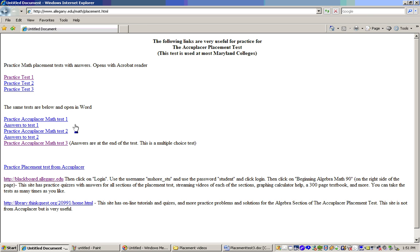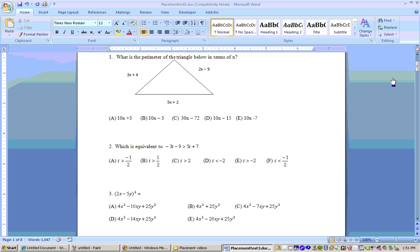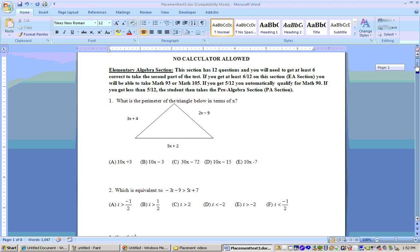The practice tests are in Word format here and Acrobat Reader format here. The problems I want to do are on the third practice test, which I already have open. These practice tests tell you approximately how many questions you need to get right on each section. The first section is the elementary algebra section, which has 12 questions, and you need to get about 6 out of 12 right to move on to the CLM section. Let's go ahead and do these.